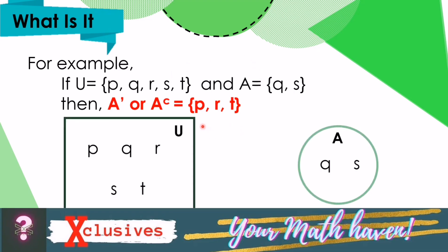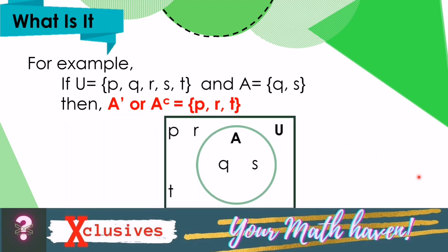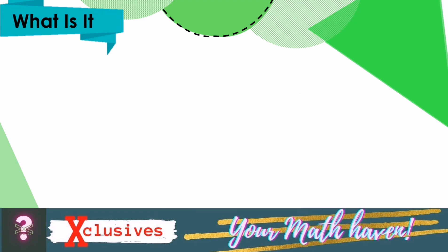In diagram form, let the rectangle be our universal set, containing the elements P, Q, R, S, and T inside. And let the circle be our set A, with the elements Q and S inside. Combining the two sets, we get this illustration. Finding the complement, we have the shaded region, which corresponds to the complement of A with elements P, R, and T, because these are the only elements found in our universal set and not found in set A.